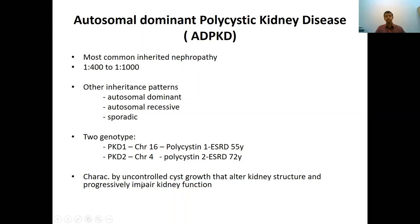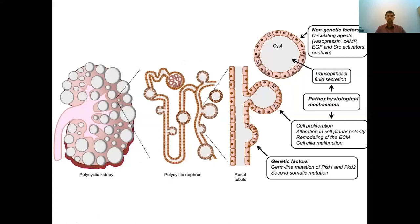The disease is characterized by uncontrolled cyst growth that alters kidney structure and progressively impairs kidney function. In polycystic kidney disease, you have the nephron with the glomerulus and the tubules. Because of these genetic abnormalities, there will be small outpouchings from the tubules that gradually enlarge. They will detach from the tubules and form large cysts, with more and more material produced into them, causing the cysts to enlarge and increase in number.